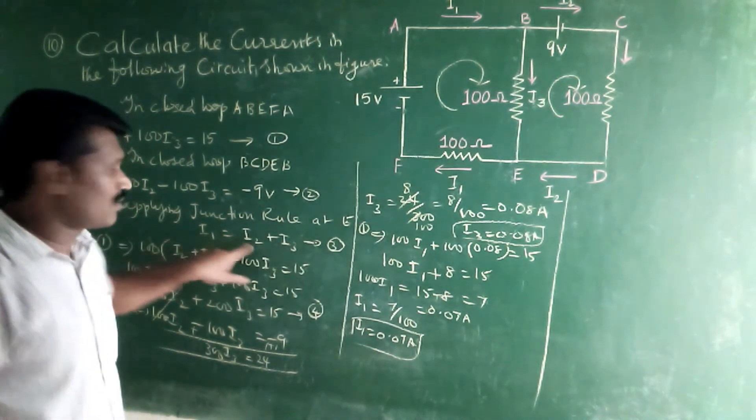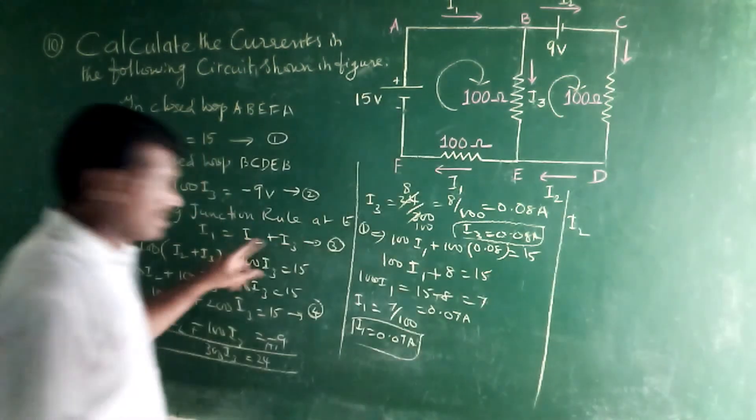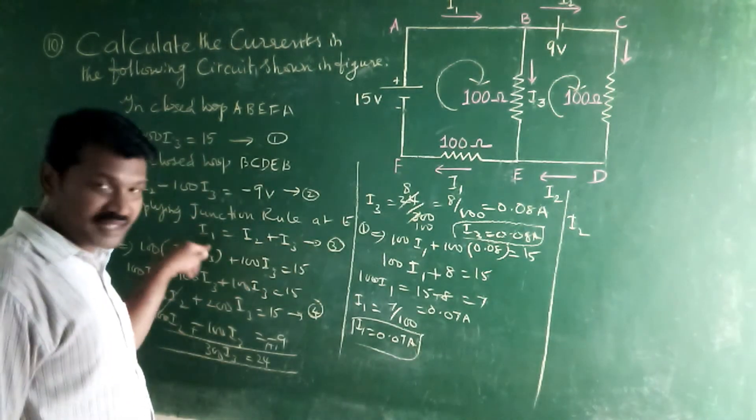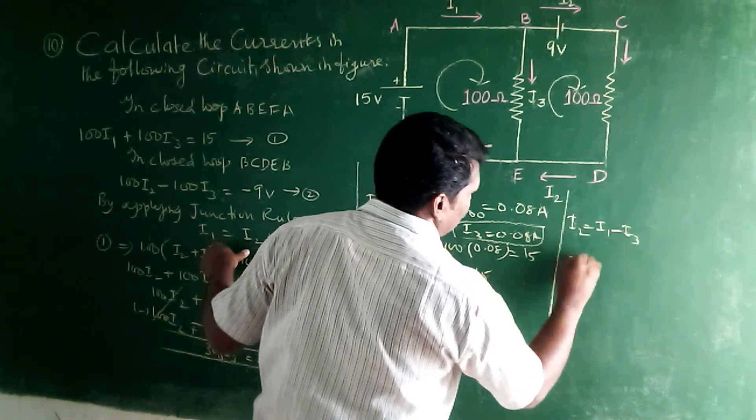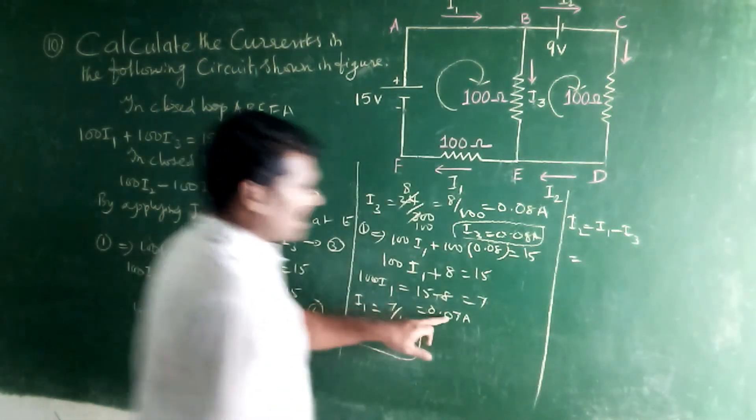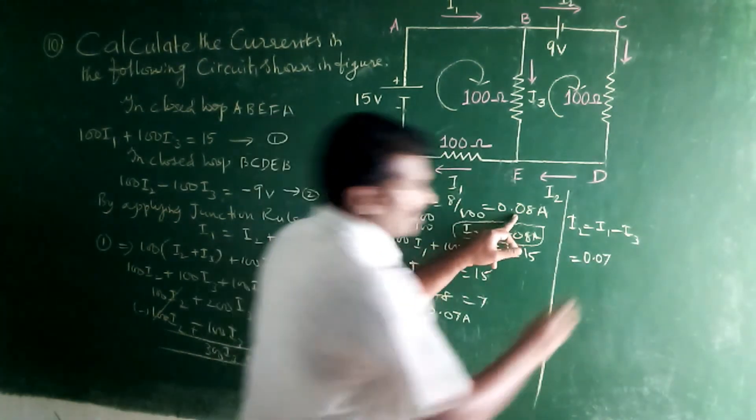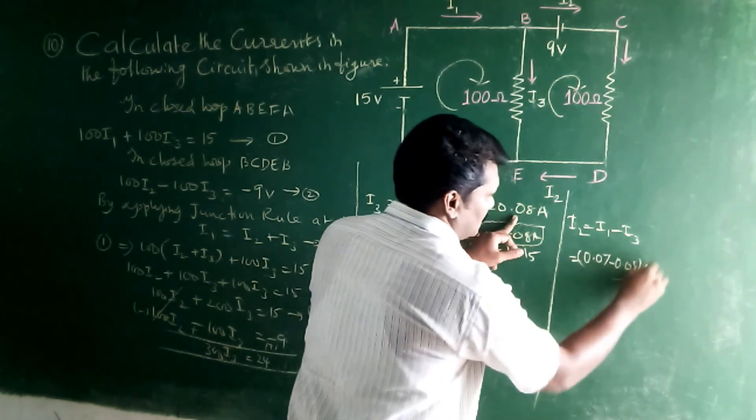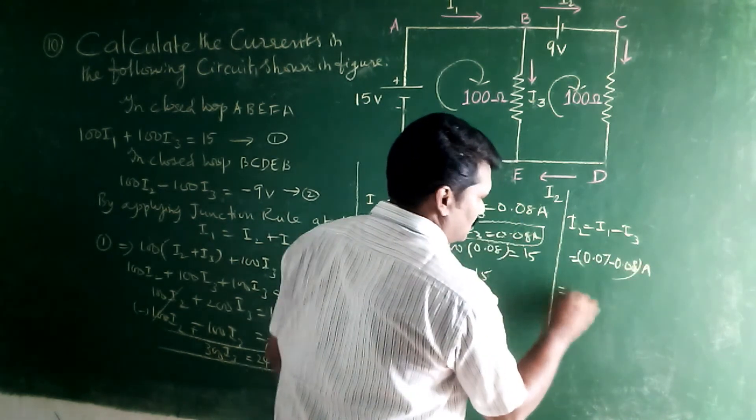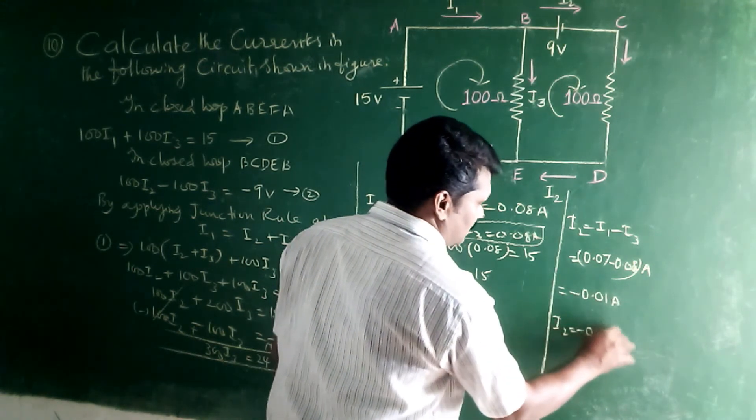I2 equal to I1 minus I3. So I2 equal to 0.07 minus 0.08. So I2 is equal to minus 0.01 ampere.